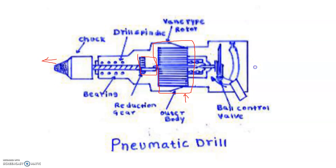The gear system transmits the multiplied torque to the workpiece by means of a chuck and drill bit attached there. When force is applied, the torque speed reduces while torque increases and the motion of drilling increases. The bearing is responsible for absorbing the impact force applied on the workpiece during drilling, and also reduces damage to the gear system and the vane motor system. This pneumatic application of a pneumatic drill is entirely different from the hydraulic circuit.